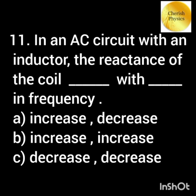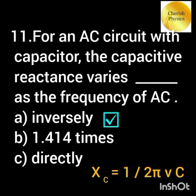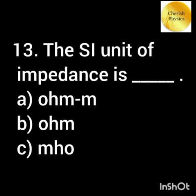In an AC circuit with an inductor, the reactance of the coil dash with dash in frequency. For an AC circuit with a capacitor, the capacitive reactance varies dash as the frequency of AC. The SI unit of impedance is — dash.